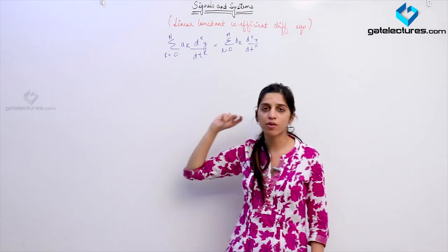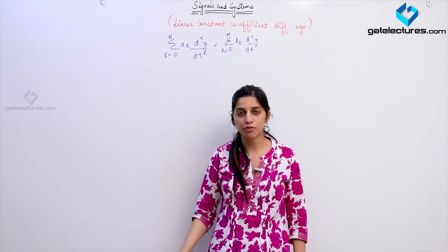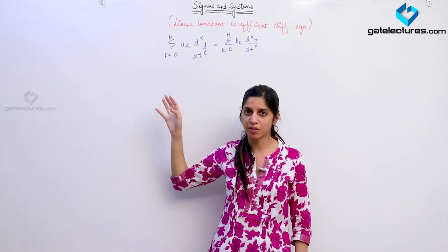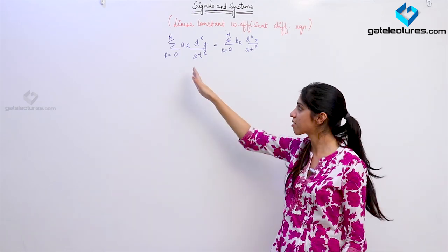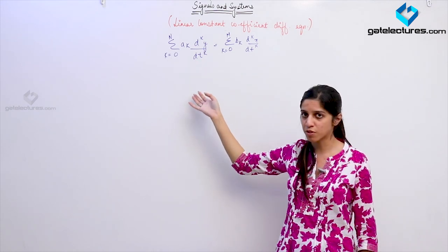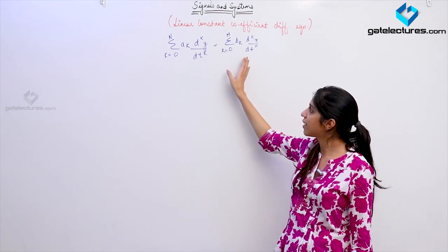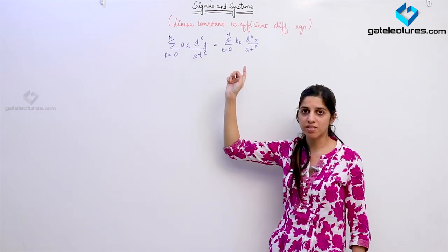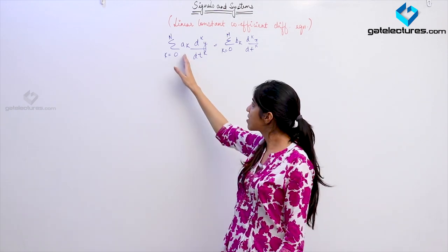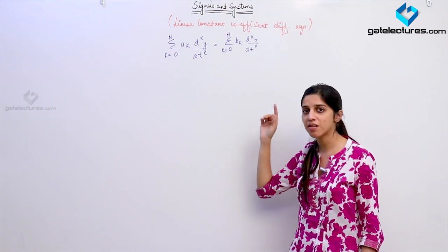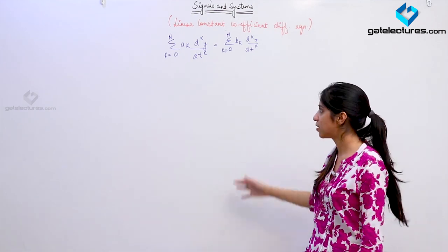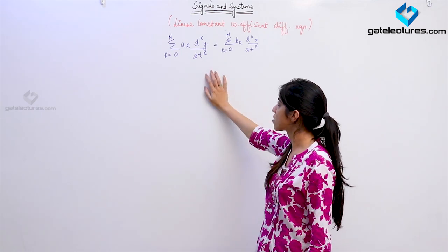For linearity — for homogeneity and superposition to be satisfied — we need that no constant must be added. If there are constant terms other than differential terms, this would not follow superposition. So we have only terms with y and x. Also, a_k and b_k are constants — they are not time-dependent variables. If a_k or b_k are time-dependent, this equation is not going to be time invariant. We do not want any terms containing t.